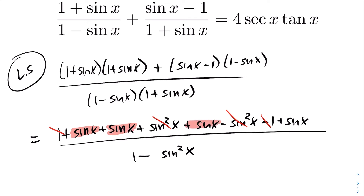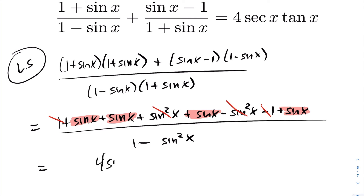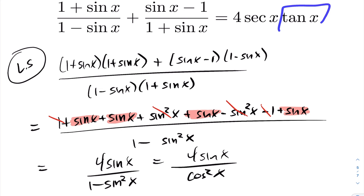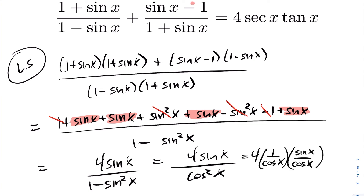Expanding the numerator and the denominator — where the bottom is a difference of squares — we get cancellation on the ones and on the sine squares. Collecting like terms we end up with four sine x terms, giving us 4 sin x over 1 − sin²x. We can then substitute 1 − sin²x = cos²x.